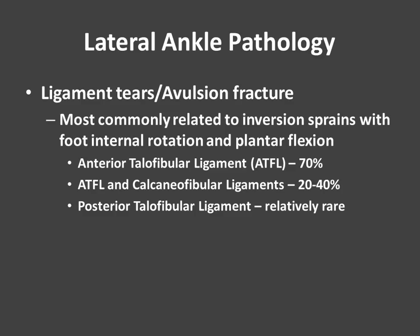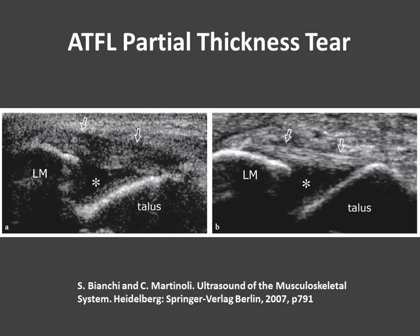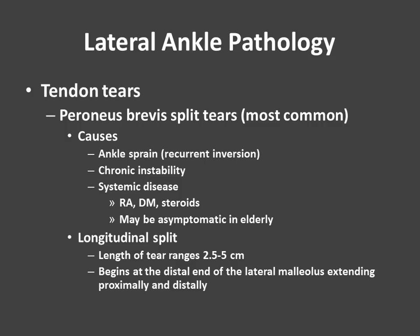Some of the most common things we see in the lateral ankle are ligamentous tears and avulsion fractures, very commonly related to inversion sprains resulting from internal rotation of the foot and plantar flexion. Typically the anterior talofibular ligament is the most commonly torn — 70% of cases — and then a combination of the ATFL and calcaneofibular ligament in the remainder. It's relatively rare to see tears of the posterior talofibular ligament. Here's an image from Bianchi and Martinoli's book showing a more normal ATFL on the right and a thickened one compatible with partial thickness tear on the left. We also see tendon tears — split tearing of the peroneus brevis is most common. Causes include ankle sprains, recurrent inversion, and chronic instability.